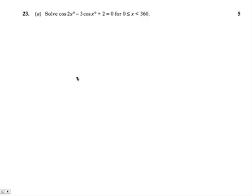2011 higher maths paper one, question 23. We're asked to solve this trig equation. It involves cos 2x and cos x - different angles, double x and single x.